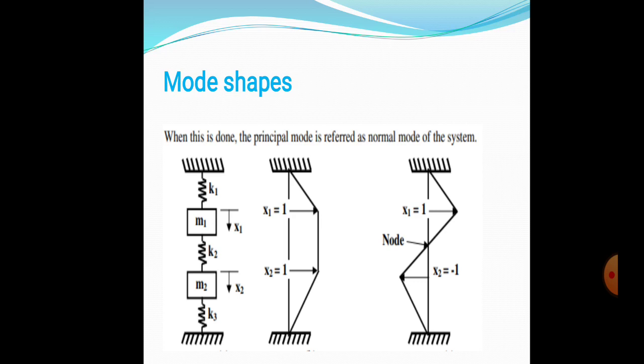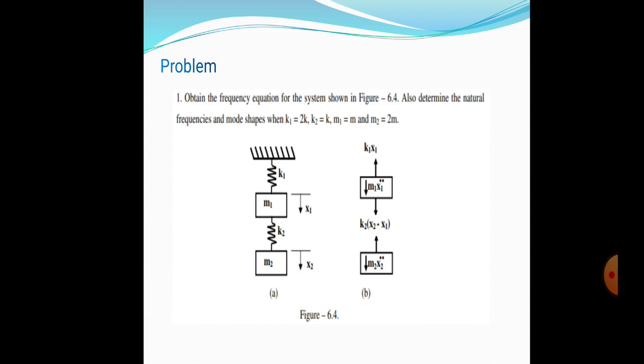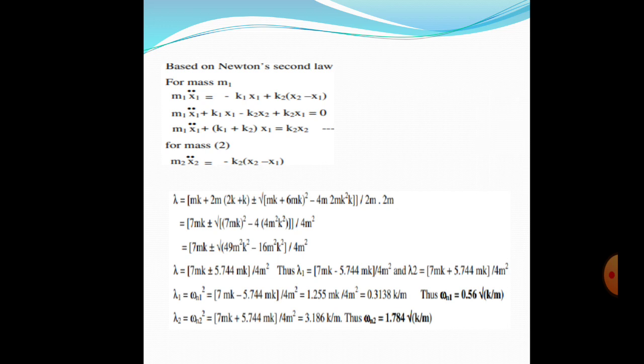A typical problem: obtain the frequency equation of the system shown in the figure and determine the natural frequency and mode shapes when K1 = 2K, K2 = K, M1 = M, and M2 = 3M. Draw the pictorial diagram showing forces on M1 and M2, and follow the same process.